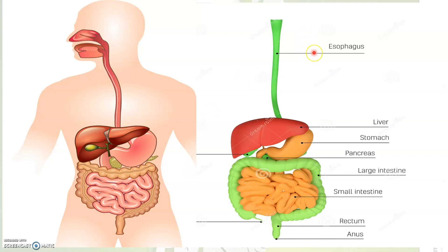Esophagus, otherwise known as food pipe. Food goes into the stomach through this esophagus, or otherwise the food pipe. Food reaches the stomach and intestinal juices that are present in the stomach will break down food into simple and soluble substances.